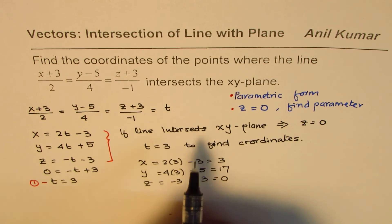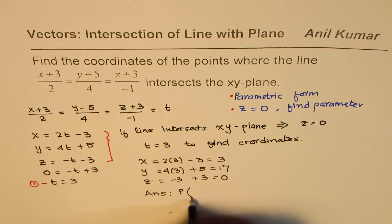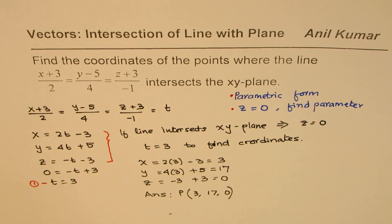So it intersects xy plane at a point. Let's call this point as p, which is going to be 3, 17, 0. So that is how we can answer this question.